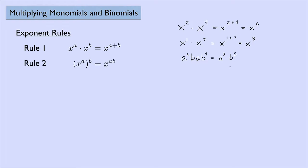Rule two says that x to the a power raised to the b power is x to the a times b power. An example: x squared, and then that whole thing cubed, is the same thing as x to the two times three, which is x to the sixth. Another example: a to the fourth raised to the second power — we can think of that as a to the four times two, which is a to the eighth power.